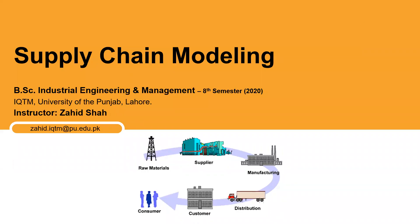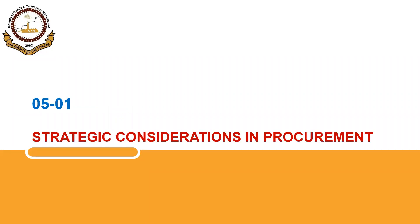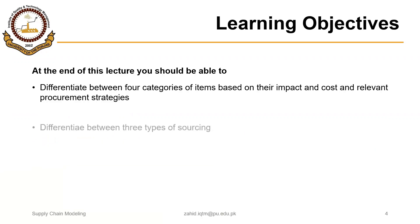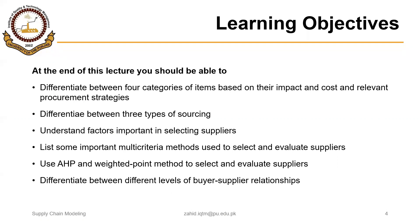As-salamu alaykum and welcome to another lecture on supply chain modeling. Today, we are going to start module five, which will have two lectures. The learning objectives for lecture one are to differentiate between four categories of purchased items based on their profit impact, cost, and relevant procurement strategies.